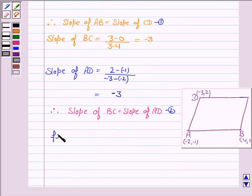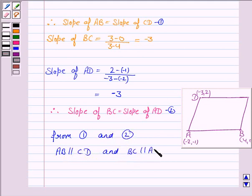So, from (1) and (2) we say that AB is parallel to CD and BC is parallel to AD.